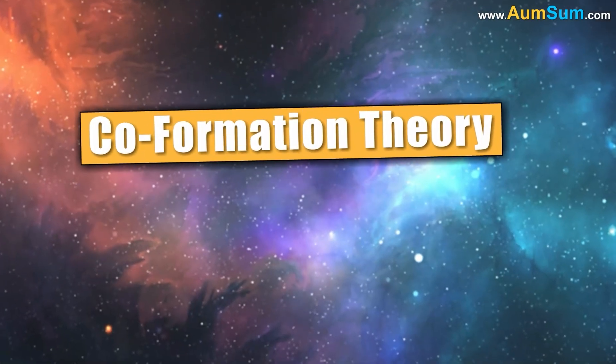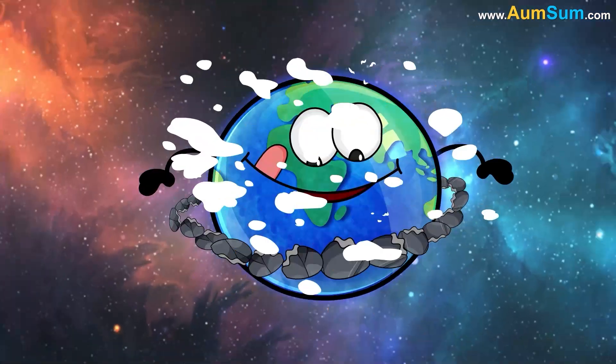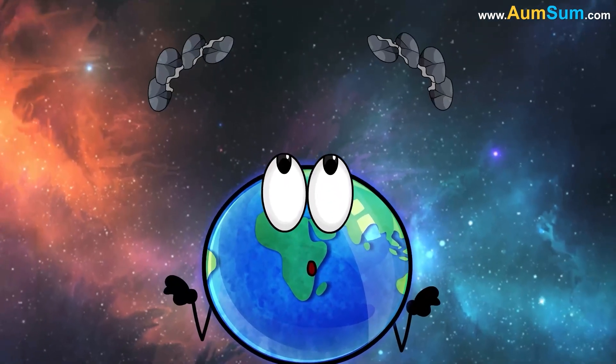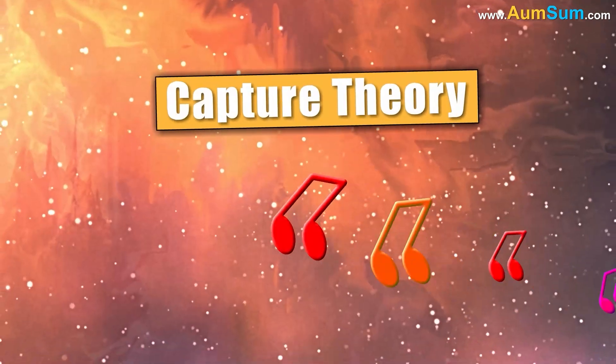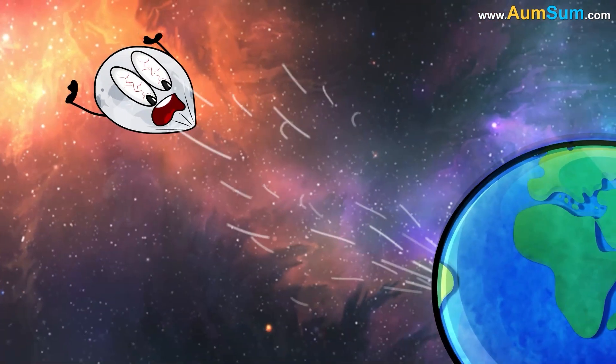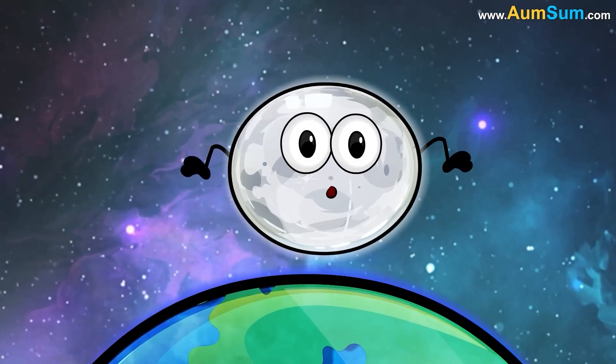According to the co-formation theory, two similar-sized bodies collided twice, forming an early Earth surrounded by a disk of material that then combined to form the moon. According to the capture theory, the moon was already formed. It was just snapped by the Earth's gravity while it was passing by.